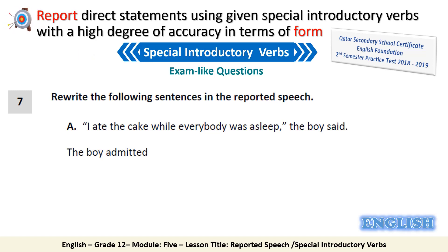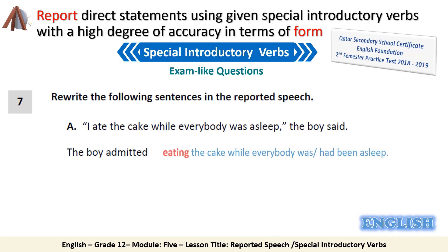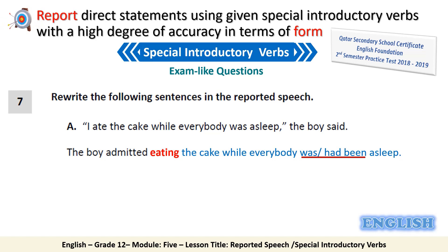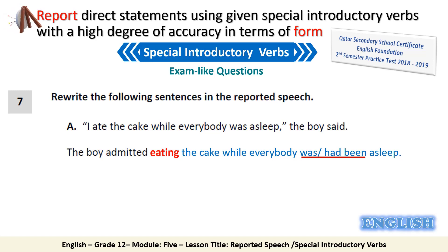Well done. The boy admitted eating the cake while everybody was — or had been — asleep. You must use the -ing form of the verb after the special introductory verb 'admitted.' The evaluation institute's model answer gives the possibility to keep the past simple tense as it is, or change it to the past perfect 'had been,' and both are considered correct answers.